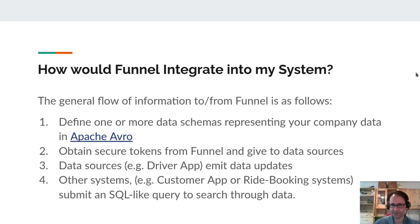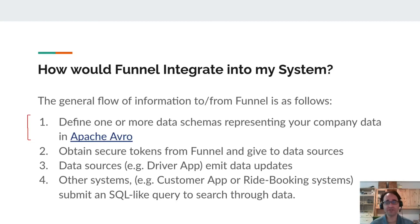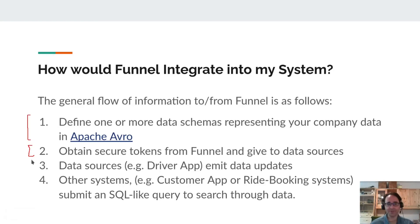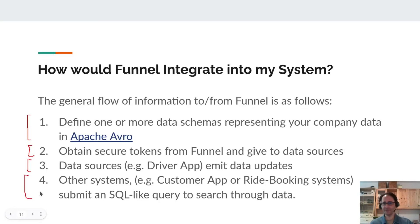So how would Funnel integrate into your system? The general flow is: first, define your data format using the open-source Apache Avro format, which is just a JSON document describing what your data looks like. The chances are very high that your data is already being transmitted in JSON, so the conversion is trivial. When you create a Funnel account, you get a secure access token to prevent unauthorized access. Data sources — such as taxi drivers — can then start emitting data immediately, and other systems like your customer app can start submitting SQL-like queries right away.